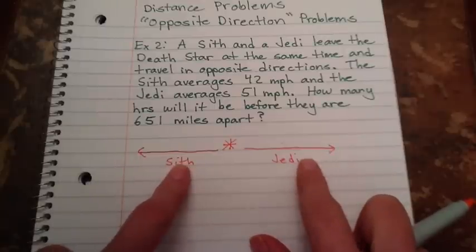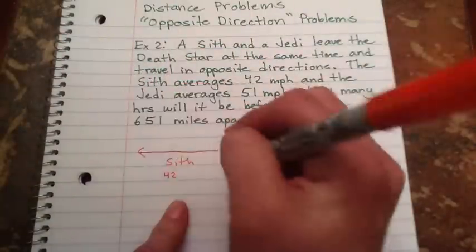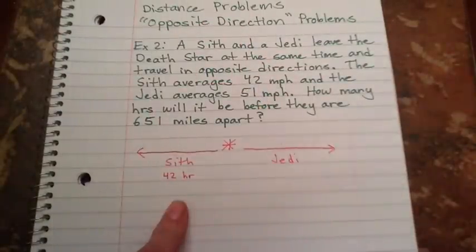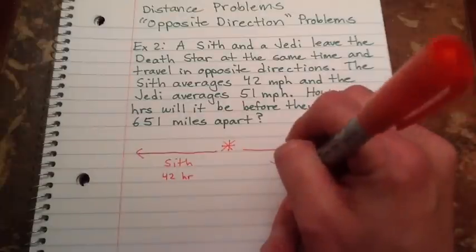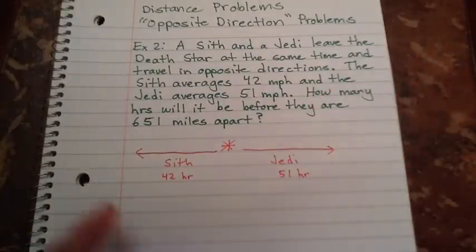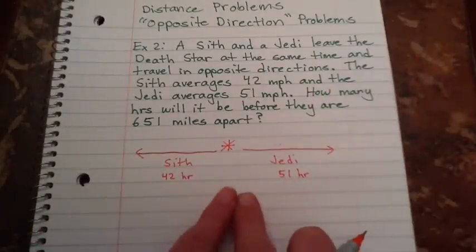The Sith is averaging 42 miles per hour. The Jedi is averaging 51 miles per hour. And then it asks you, when are they going to be 651 miles apart?